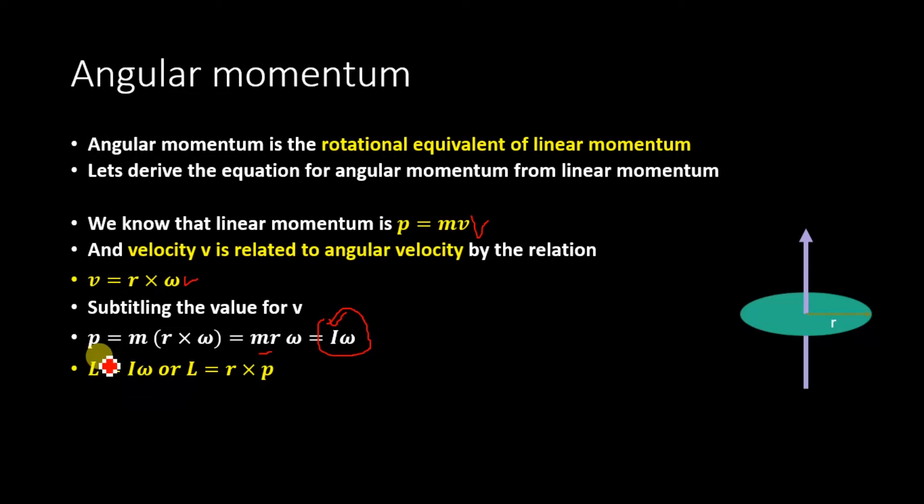The angular momentum is denoted by L, where the linear momentum is denoted by p. Or in other terms, we have angular momentum is equal to r cross p, where p is linear momentum, r is the radius, and L is the angular momentum.